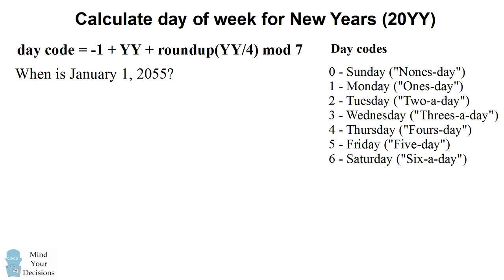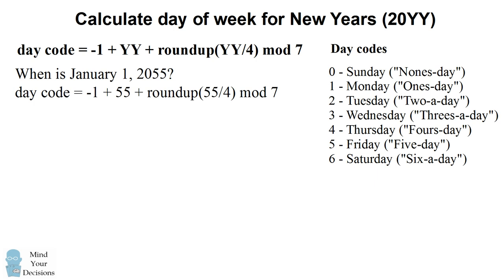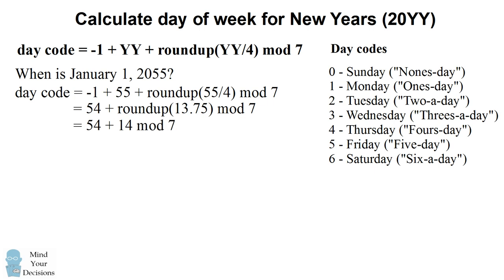Let's figure out when January 1st, 2055, falls. Our year value is 55. We calculate the day code by substituting in 55: negative 1 plus 55, plus 55 over 4 rounded up, all modulo 7. 55 over 4 is 13.75, which we round up to 14. We then end up with 68 mod 7. The closest multiple of 7 is 63, so 68 is 5 more than 63. The day code is 5, which means January 1st, 2055 will land on Friday.